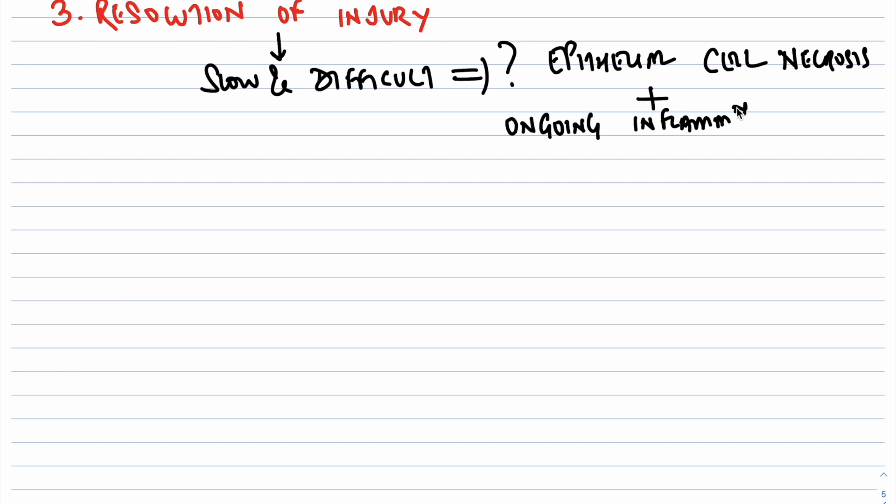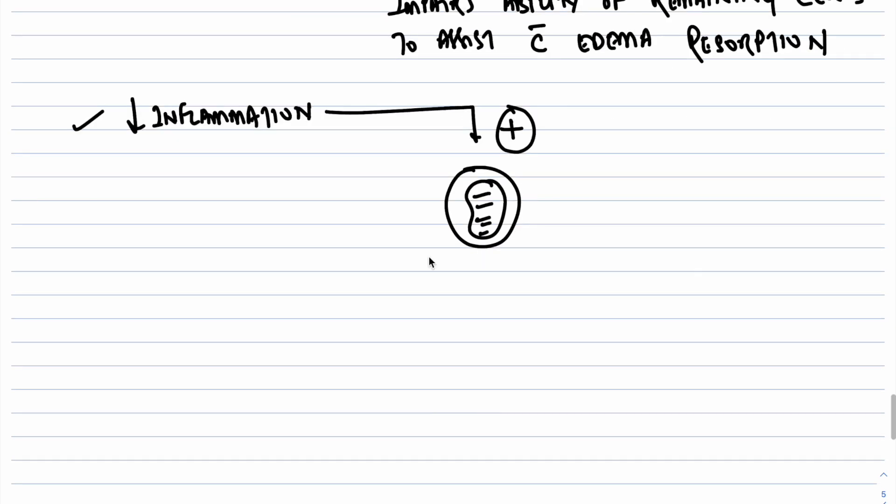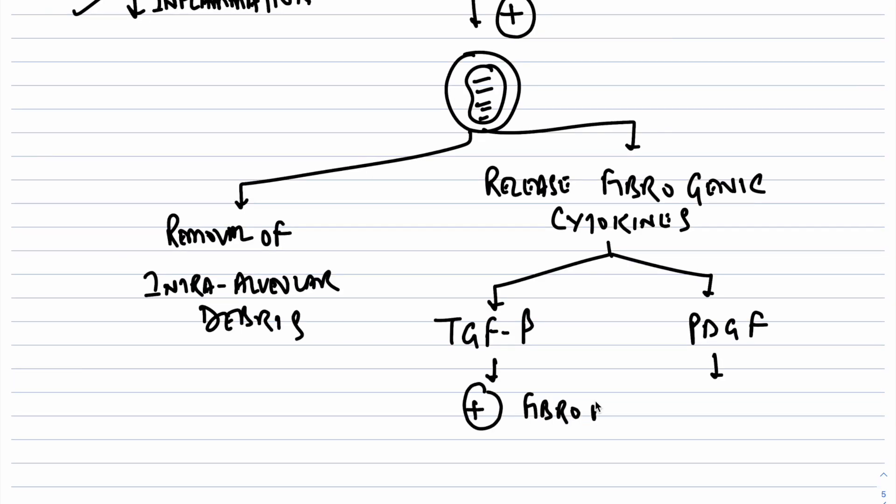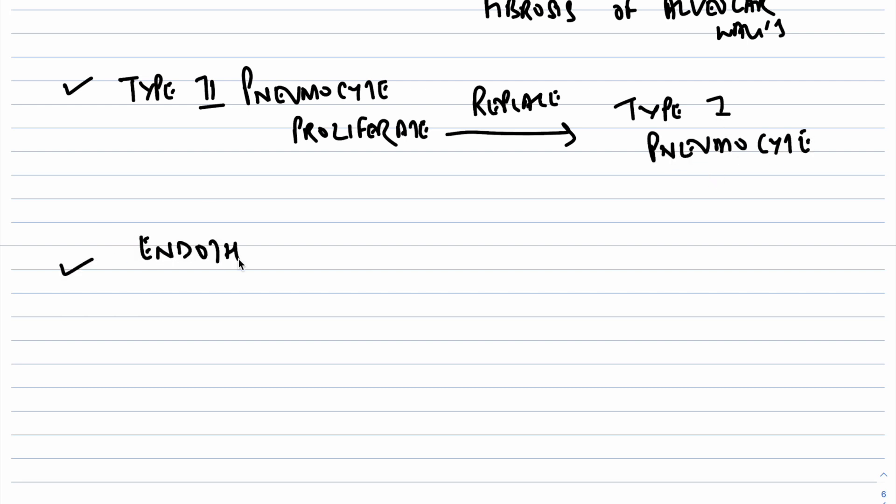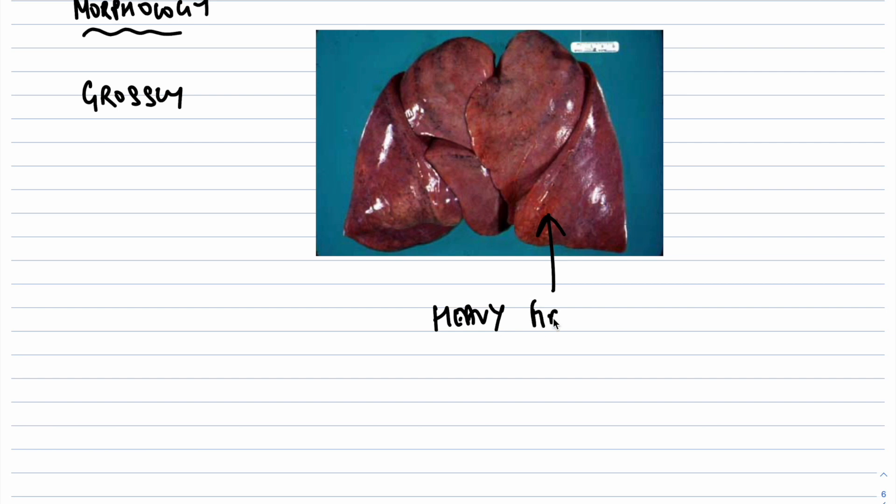Resolution of injury is slow and difficult in ALI or ARDS due to epithelial necrosis and ongoing inflammation that impairs the ability of remaining cells to assist with edema resorption. Eventually, when the inflammatory stimulus decreases, macrophages remove the intra-alveolar debris and release fibrogenic cytokines like TGF-beta and PDGF. These factors stimulate fibroblast growth and collagen deposition, ultimately leading to fibrosis of the alveolar walls. Residual type 2 pneumocytes proliferate to replace type 1 pneumocytes, reconstituting the alveolar lining. Endothelial restoration occurs through proliferation of uninjured capillary endothelium.